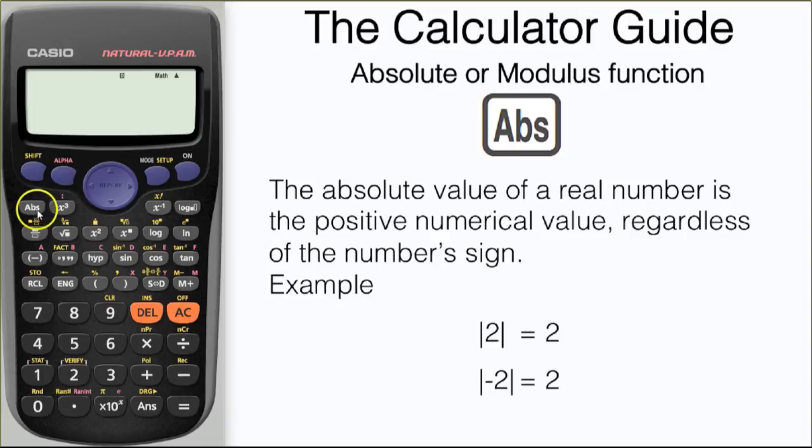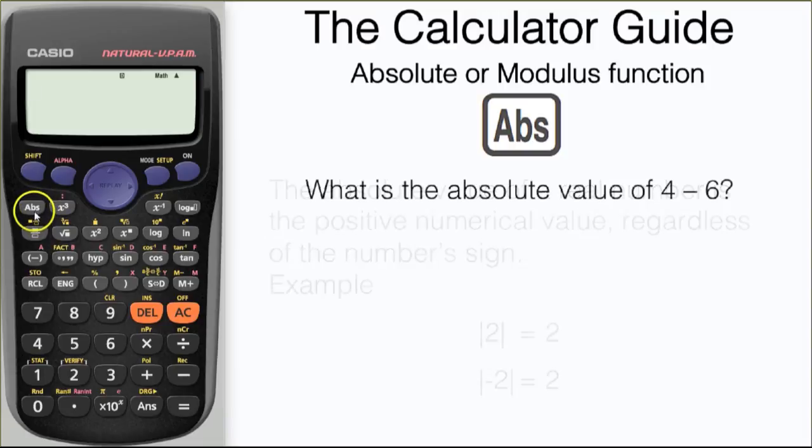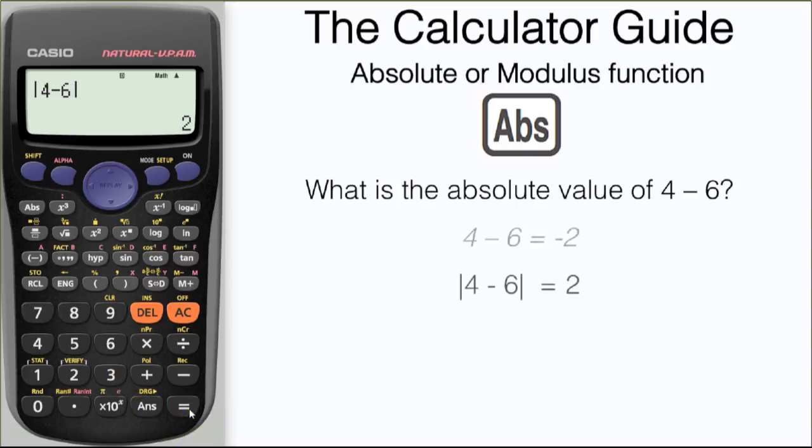For example, we've got 2 and minus 2 here. The absolute value is 2. So what is the absolute value of 4 minus 6? The actual value will be minus 2, but if we use the absolute function, we get an answer of 2. We're only interested in the positive value.